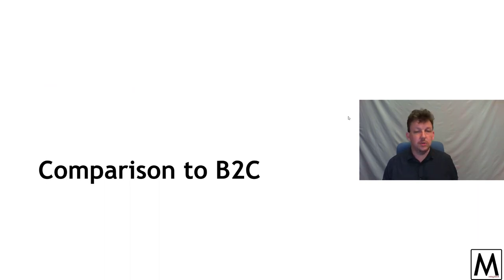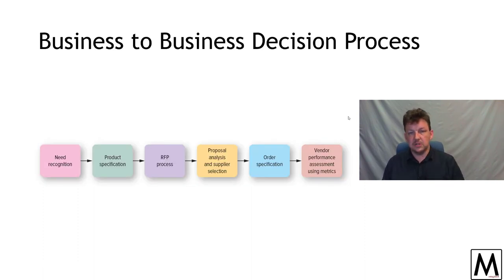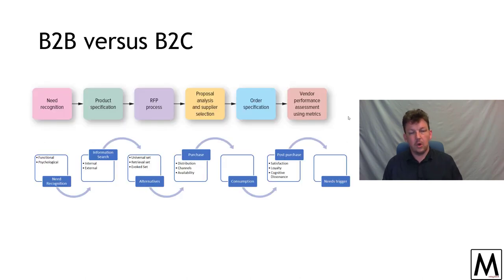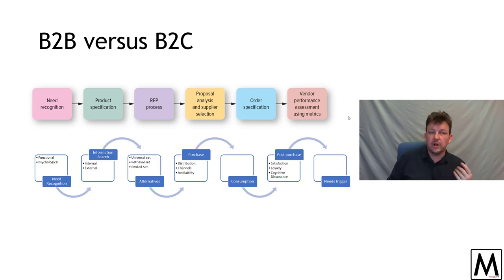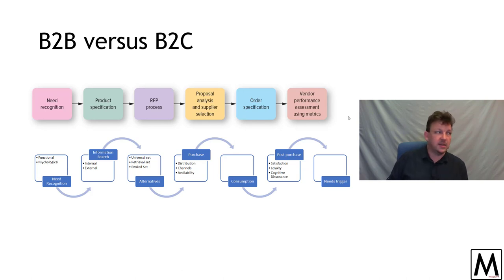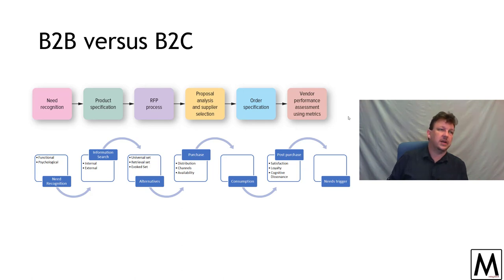In terms of comparisons to business to consumer, there's one key one to draw your attention to: the B2B decision process compared to the B2C process. There are similarities and some differences. In B2B you have a needs recognition, but you tend to do product specifications — and those specifications can be precise. For example, in order to run certain workshops I need a specific number of Lego bricks, and I can tell you the exact numbers, specifications, type, and colors. It'll be down to detail, not just 'a couple of kilos of stuff.'